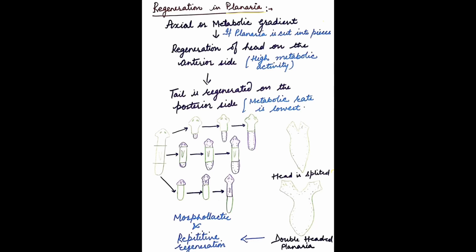Another example of morpholytic regeneration is planaria, which is a flatworm. In planaria, there is an axial or metabolic gradient of growth. If the body of planaria is cut into several pieces, the regeneration of the head always takes place on the anterior side. As seen in the diagram, the head develops on the anterior side and the tail on the posterior side.